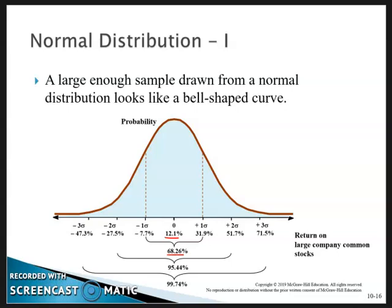Actual distributions don't really look exactly like a bell curve. The actual returns typically have fatter tails—that's what you would actually see in the market.